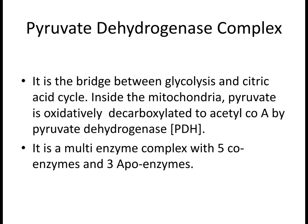The pyruvate dehydrogenase complex is a multi-enzyme complex where more than one enzyme is present in an enzyme system. This complex acts as a bridge between glycolysis and the TCA cycle, also called the Krebs cycle or tricarboxylic acid cycle. The enzyme is present in the mitochondria, where pyruvate is oxidatively decarboxylated to acetyl-CoA. This complex has three enzymes and five coenzymes.